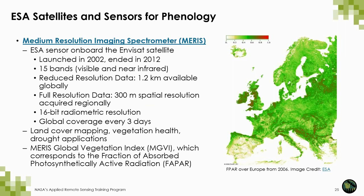ENVISAT's Medium Resolution Imaging Spectrometer, or MERIS, acquires multi-spectral imagery of the Earth and is a programmable medium-spectral resolution sensor with 15 spectral bands. Although data from MERIS is primarily used for measurement of ocean color, similar to SeaWiFS, it can be used to monitor the state and evolution of Earth's vegetation color. In particular, the MERIS Global Vegetation Index corresponds to the fraction of absorbed photosynthetically active radiation, or FPAR. This is a standard product from MERIS and really allows folks to understand the critical role of plant photosynthetic processes through primary productivity of vegetation canopies.